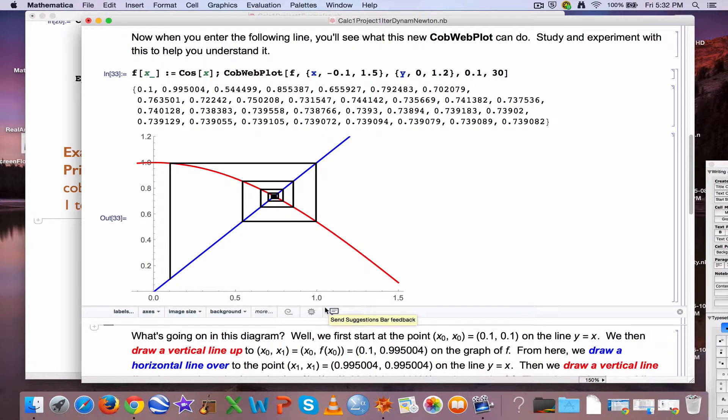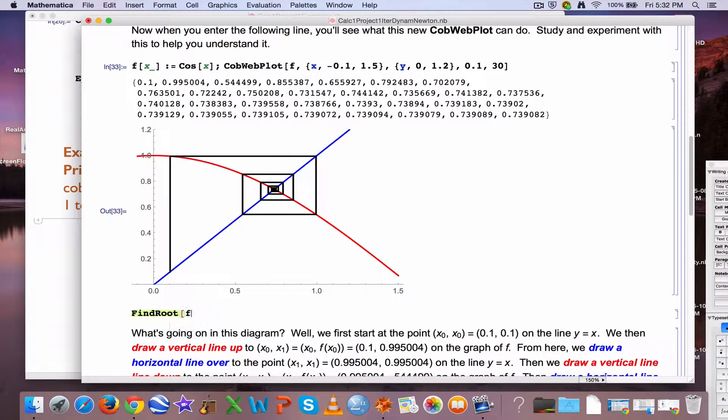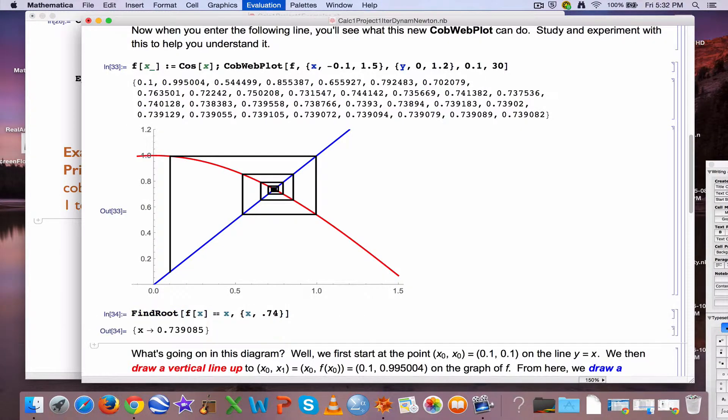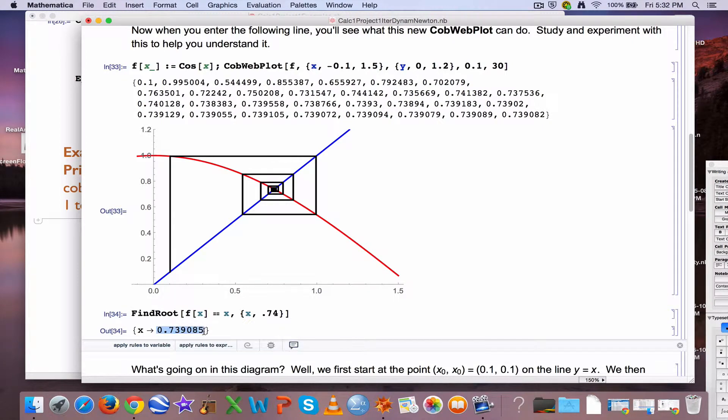We could confirm that in Mathematica with a command called find root. Where is f of x equal to x? Give it an initial guess of, say, 0.74, and it gives an approximation of the intersection point. 0.739085 is the approximate intersection point, which is the approximate fixed point, an attracting fixed point in this case.